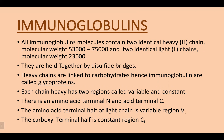Immunoglobulins are made of two heavy chains and two light chains, held together by disulfide bonds and disulfide bridges. Heavy chains are linked to carbohydrates, hence immunoglobulins are called glycoproteins — proteins which are attached or linked to carbohydrates.